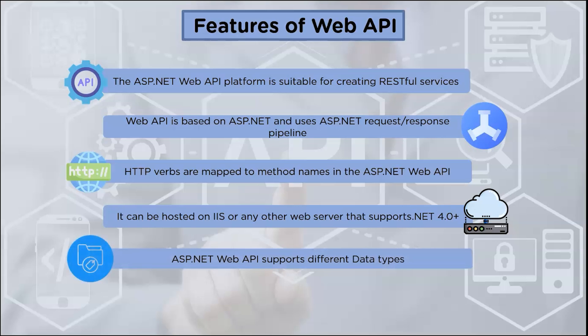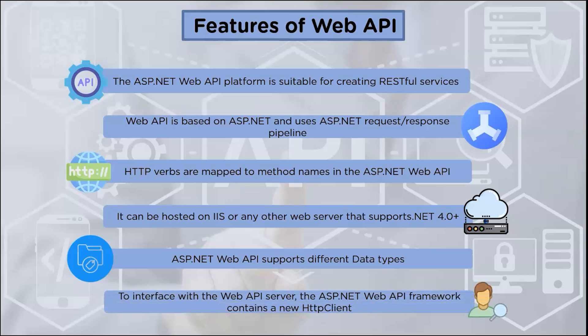ASP.NET Web API supports different data types like JSON, XML, and many other formats that are supported natively. To interface with a web API server, the ASP.NET Web API framework contains a new HTTP client, which can be used in ASP.NET and MVC server-side applications.